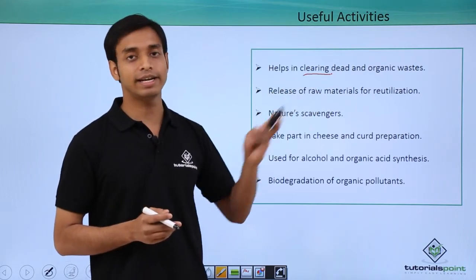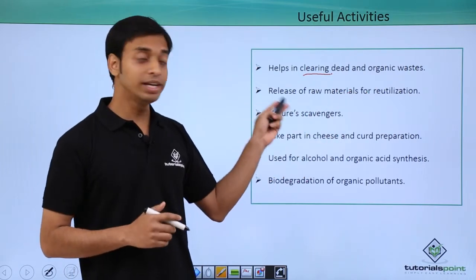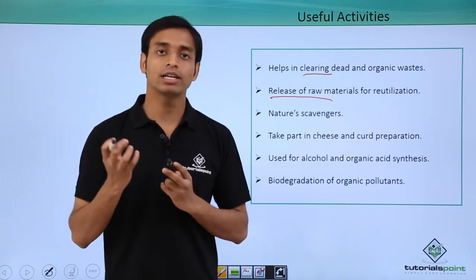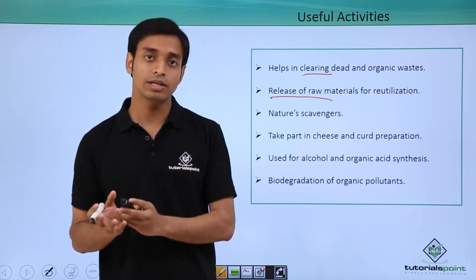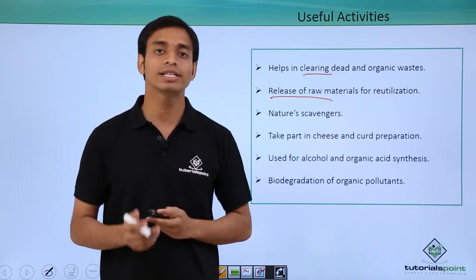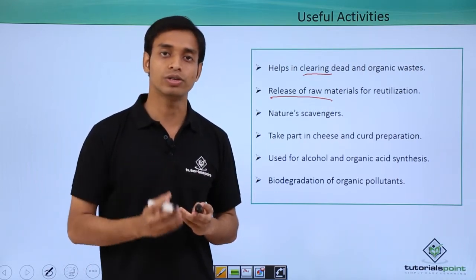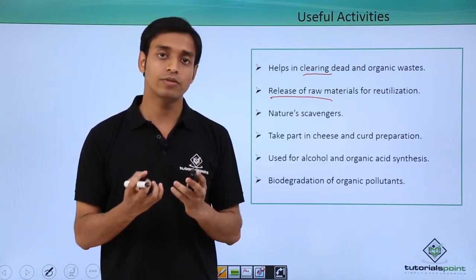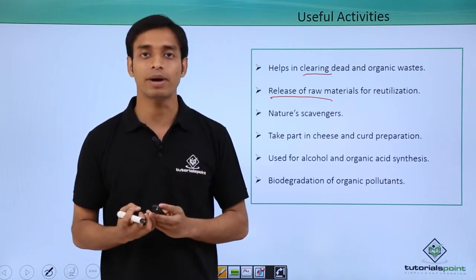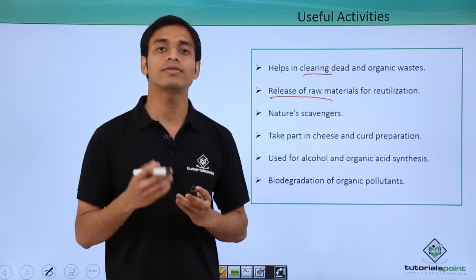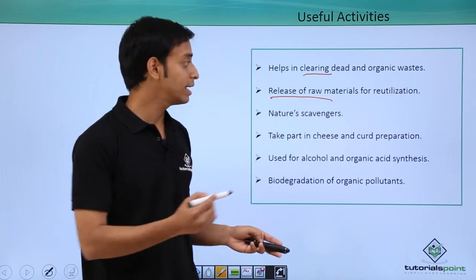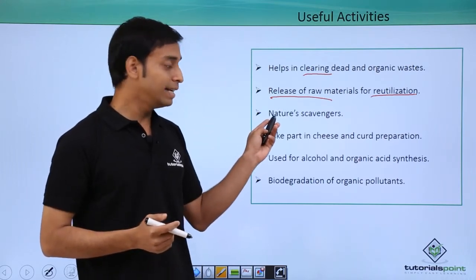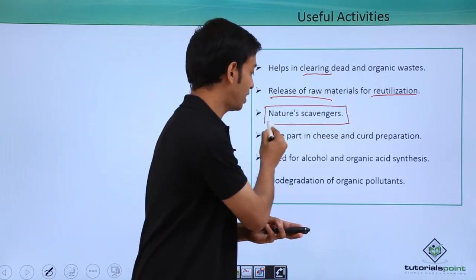Saprophytic bacteria help in the release of raw materials. After decaying, they break down organic compounds and release the raw materials that the plant or organism had used during its lifetime. This helps in recycling of nutrients. Without saprophytic bacteria, the nutrients present on earth would not come back, and slowly the nutrient content would reduce. These bacteria help in re-utilization of nutrients by new upcoming organisms.